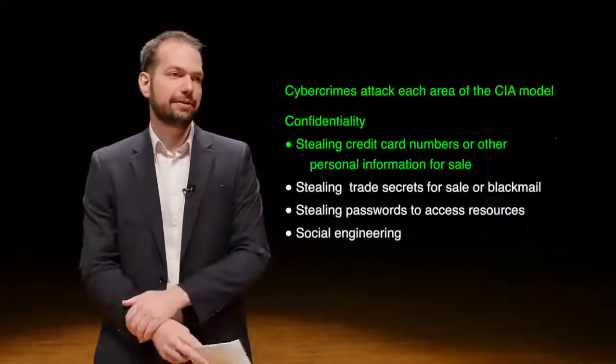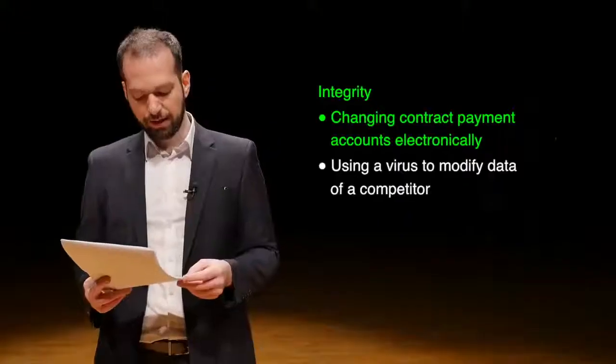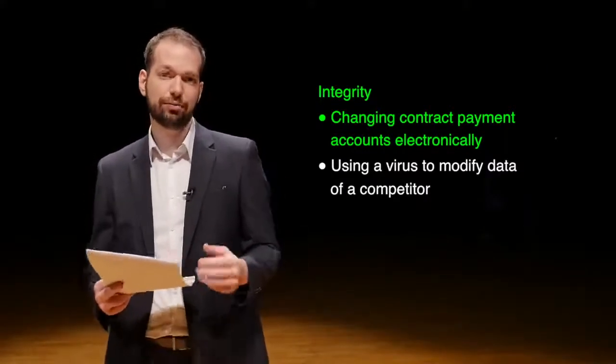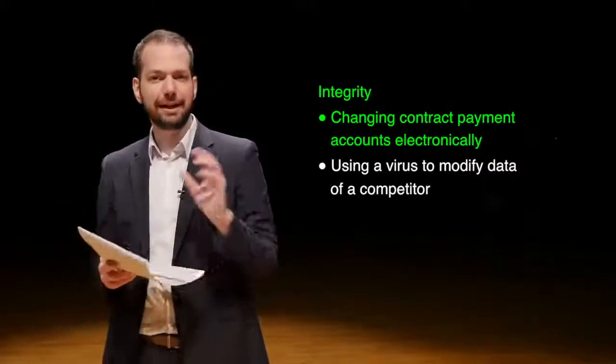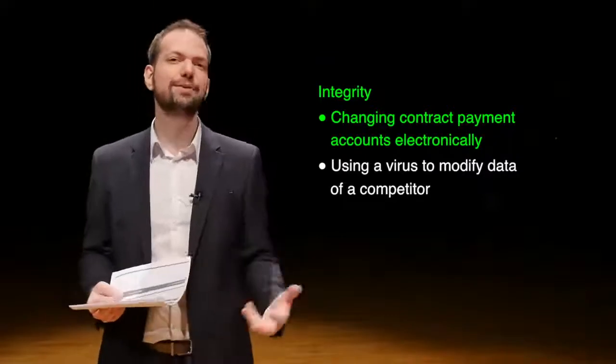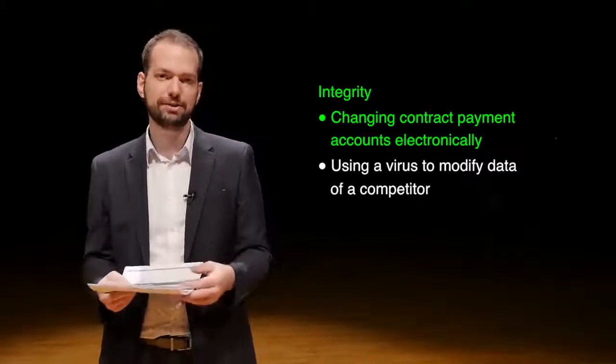Cyber crimes attack each area of the CIA model. Attacking confidentiality could mean stealing credit card numbers or personal information for sale — then it's no longer confidential. Stealing trade secrets for sale or blackmail, stealing passwords to access resources, or social engineering are all attacks on confidentiality. For integrity, criminals might change contract payment accounts electronically — for example, intercepting a contract and changing the bank account so payment is sent to someone else. Cyber criminals do this all the time: they intercept a transaction or contract, change information, and send it on.